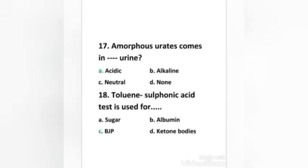Next question: amorphous urates come in which type of urine? Acidic urine, alkaline urine, neutral, or none. Right answer is option A, amorphous urates come in acidic urine.